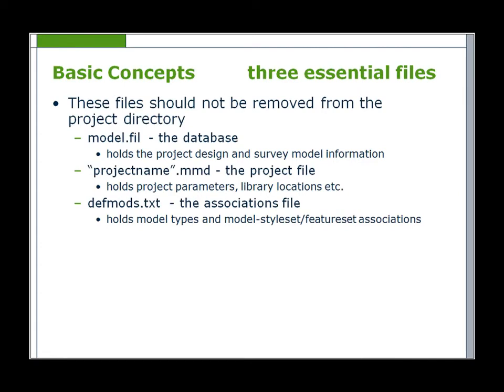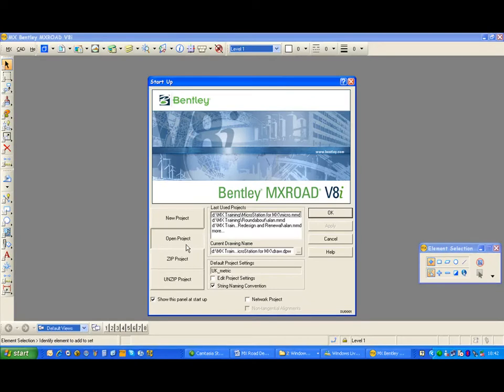Every project has three essential files and these files should not be removed from the project directory. There is a model.fill — the database that holds the project design and survey model information. There is a project name MMD file, which stores the project parameters and library locations. There is also a defmods.txt file, which holds model types and model style set feature set associations.